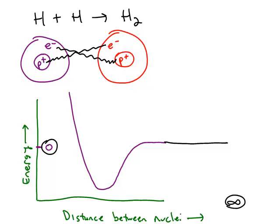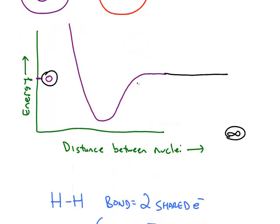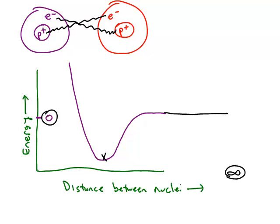So as we bring these two atoms closer together, the energy decreases. Eventually, it reaches a minimum. And then if we try to push the atoms closer, the energy shoots up quite rapidly because now we get repulsion between the nucleus of one atom with the nucleus of the other.